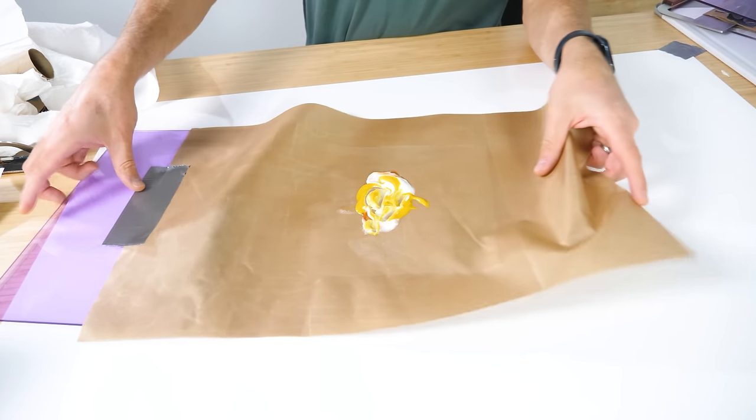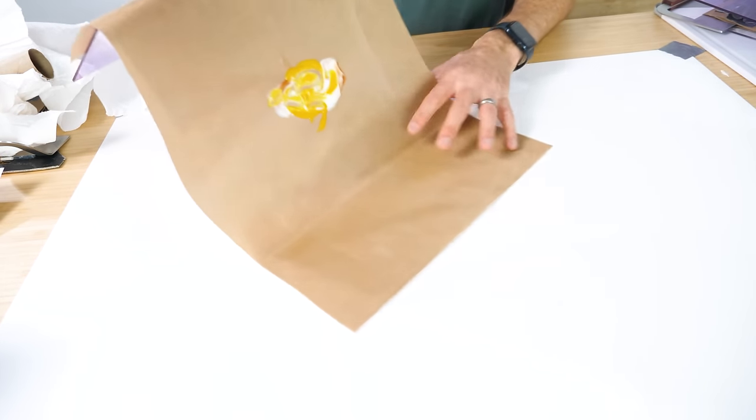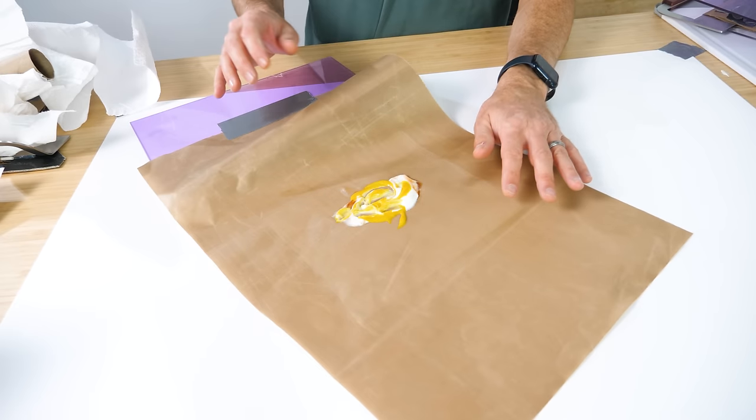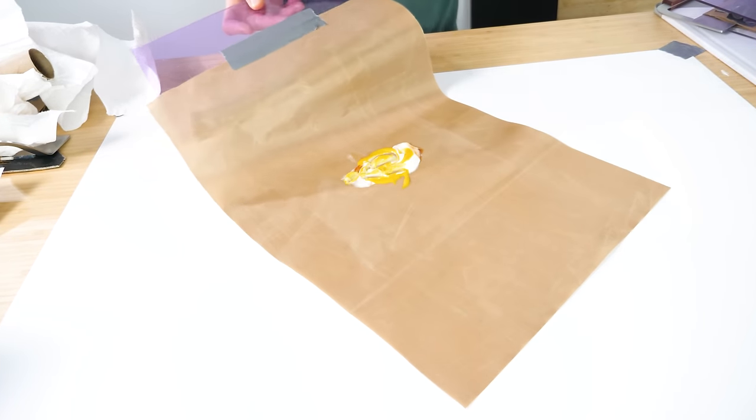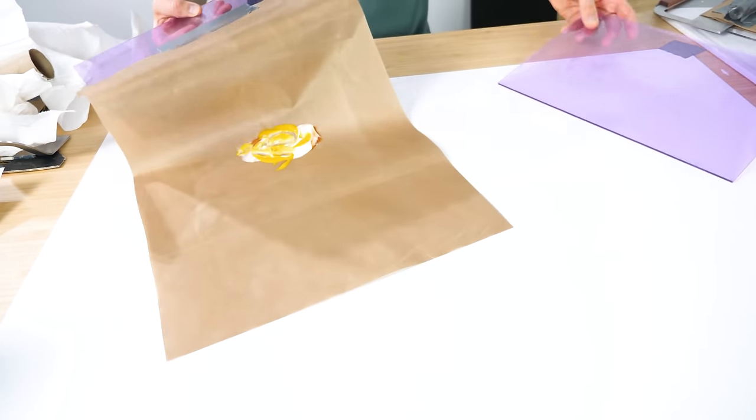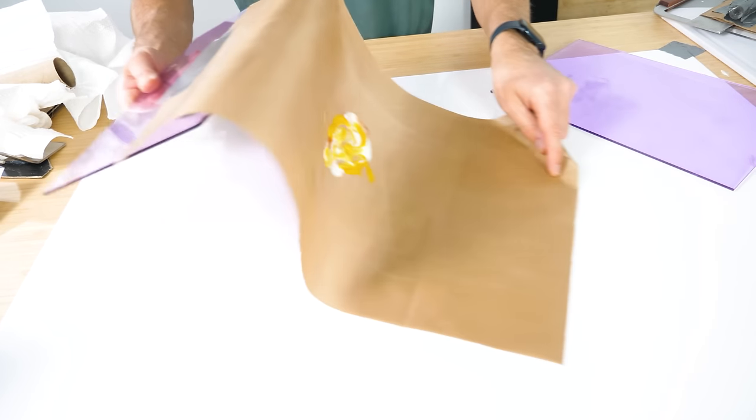But the problem with the single sheet method is we can't put it back now. In order to do that we need a different mechanism. Instead of just having it as a single sheet that I slide this back board under, we need a rolling mechanism so that I can move it both ways.